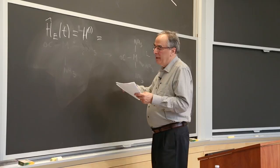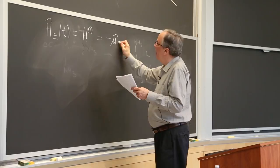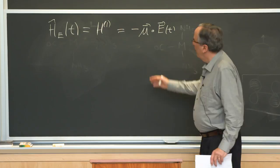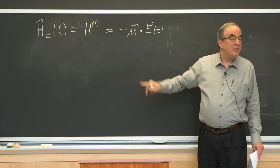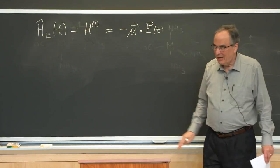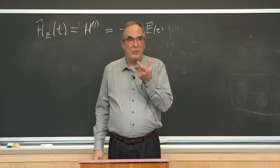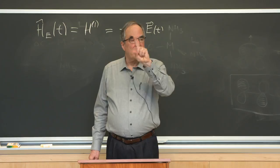So H₁ is going to be −μ · E(t), a vector dot product. However, μ is a vector in the molecular frame and E is a vector in the laboratory frame, so this dot product is a whole bunch more complicated than you'd think. When we talk about the rigid rotor, it tells us the probability amplitude of the orientation of the molecular frame relative to the laboratory frame — that's where all this information resides.